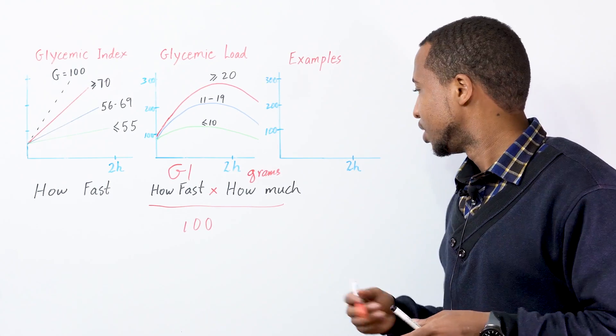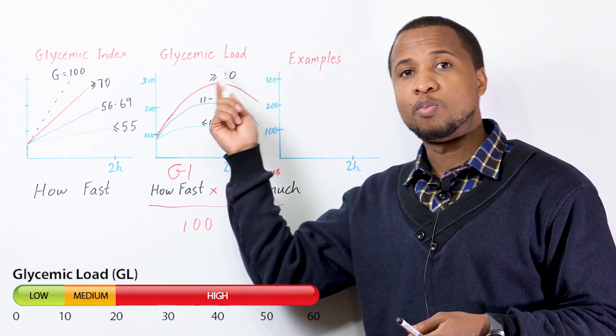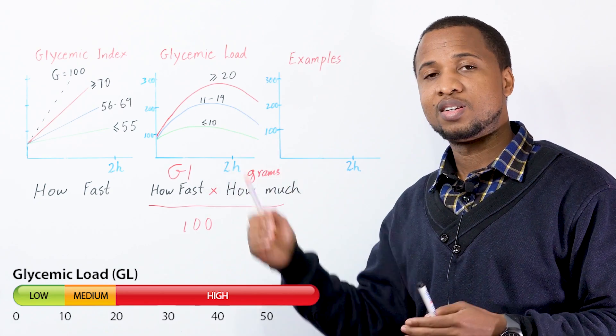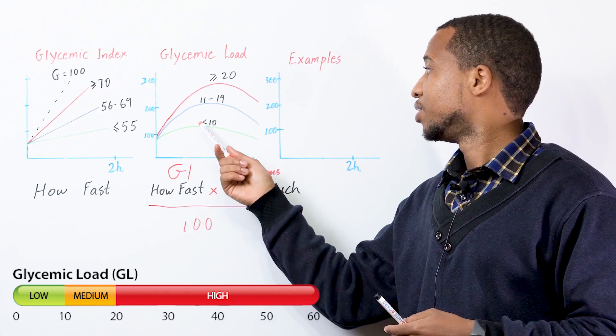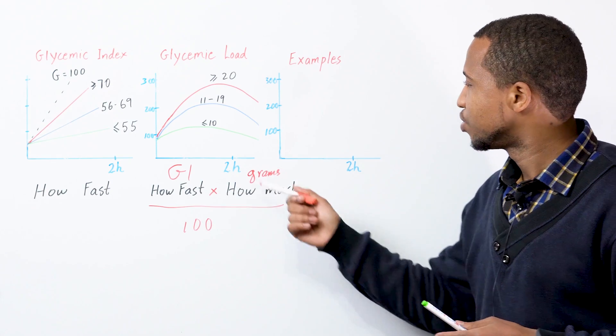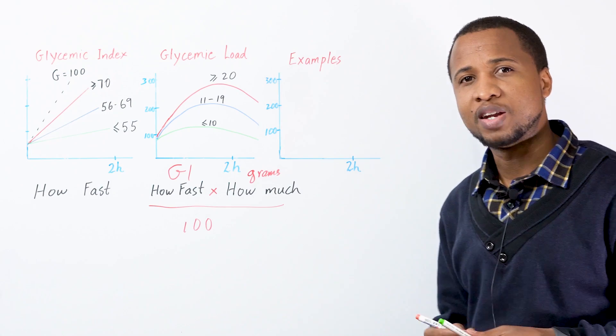Doctor stuff. Anything that is 20 or more is high. 11 to 19 is moderate. And then 10 or less is low.